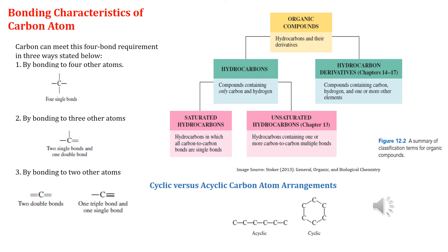If you look at the periodic table, you would see that carbon is a member of group 4A, meaning it has four valence electrons. In the formation of compounds, four additional valence electrons are needed to give carbon atoms an octet of valence electrons — please review the octet rule from your high school chemistry. These additional electrons are obtained by electron sharing, which we call covalent bond formation, and the sharing of four valence electrons requires the formation of four covalent bonds.